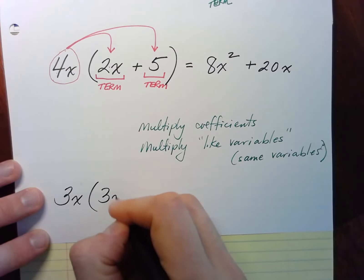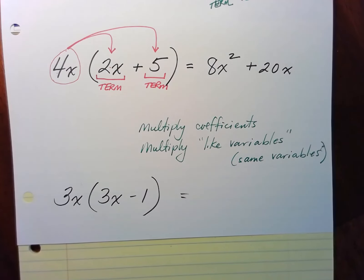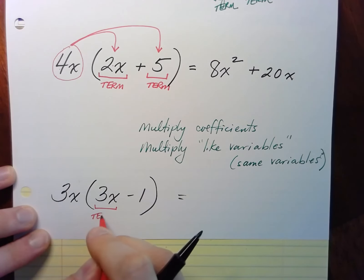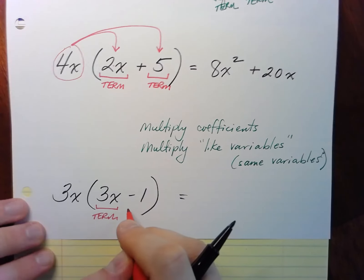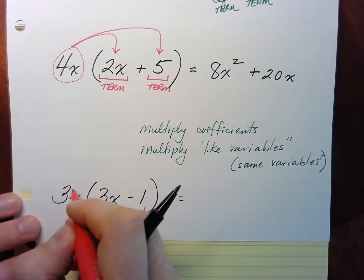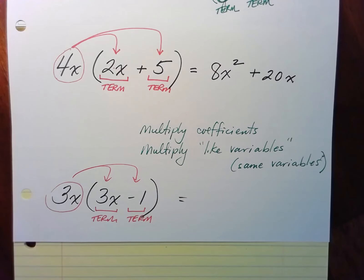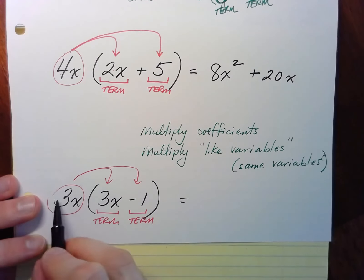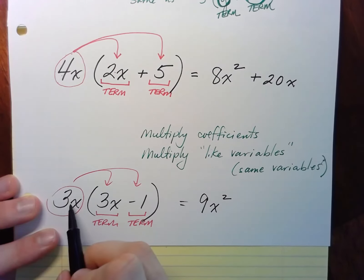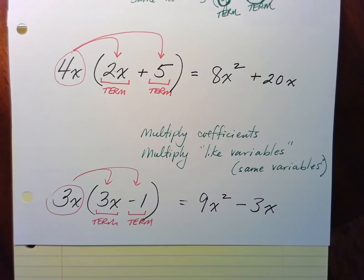One more example: 3x times (3x minus 1). Here 3x is a term and minus 1 is a term. Distributing 3x: 3x times 3x gives 9x² (3 times 3 is 9, x times x is x squared), and 3x times negative 1 is minus 3x. So the answer is 9x² minus 3x.